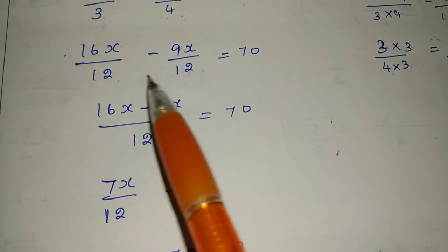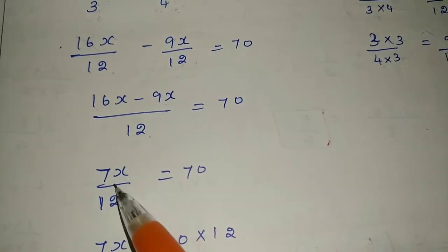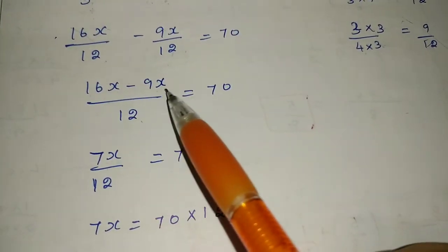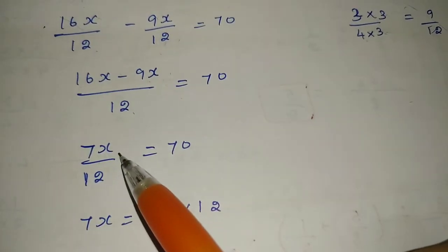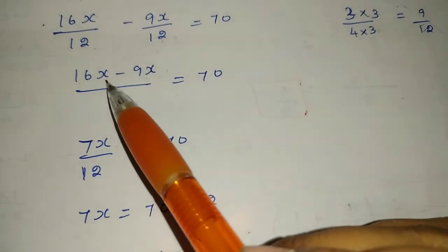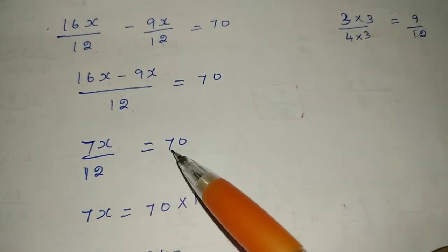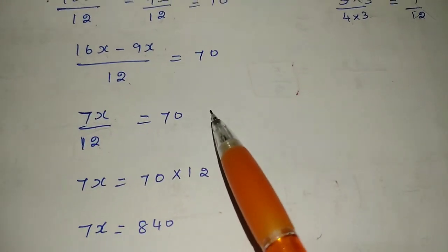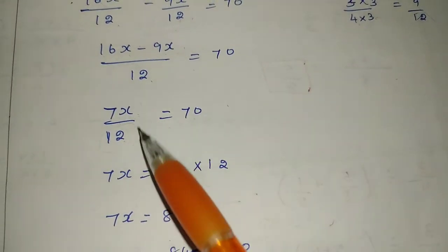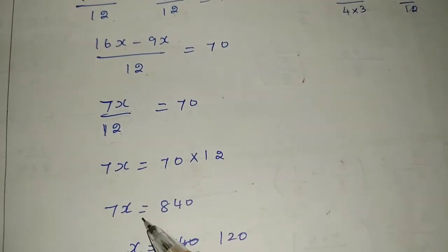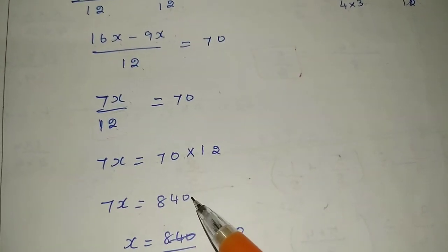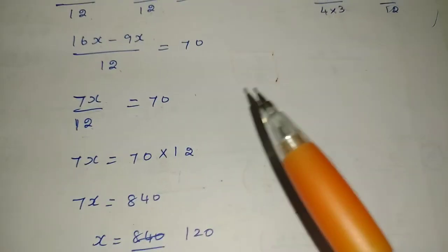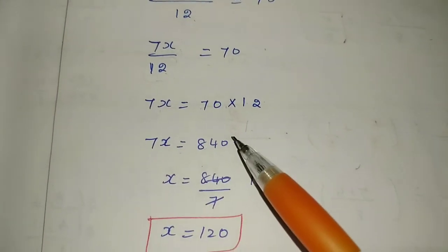Now subtract: 16 minus 9 is 7. Both are like terms in x, so we get 7x/12 = 70. The 12 is in the denominator, so taking it to the other side gives multiplication: 7x = 70 × 12. 70 × 12 = 840, so 7x = 840.